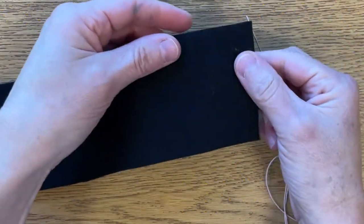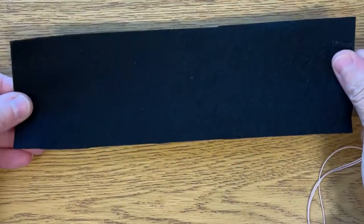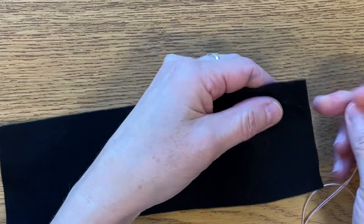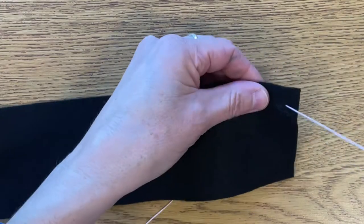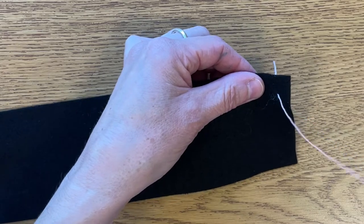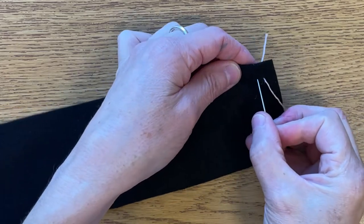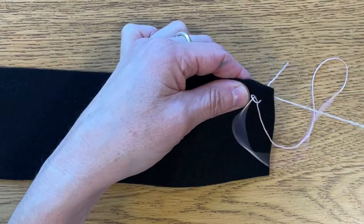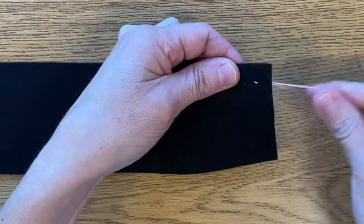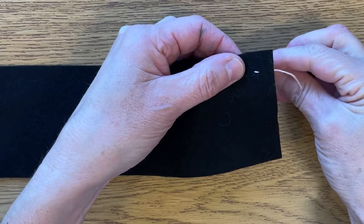Now we're ready to start our first stitch. It's called a running stitch and it's the simpler stitch. We're going to start on the top right corner if you're right-handed. Come up from the back, pull until your knot hits the back of your fabric, leave a little space and go back down into your fabric and pull. And you've just made your first stitch.